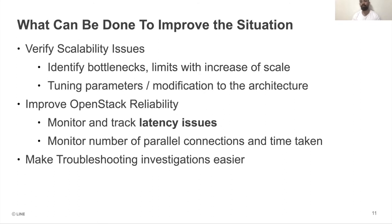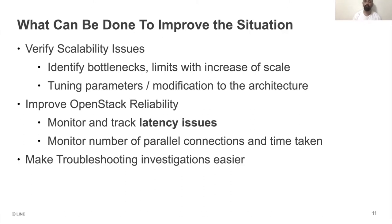While encountering these problems, we started to understand and improve the situation, dividing the different areas into sections. First, we started to verify the scalability issues — if we are going to scale horizontally or vertically, we need to verify what the bottlenecks are and what limits cause problems. For example, certain RPC timeouts may increase as scale increases, so we may need to modify those parameters or the architecture accordingly.